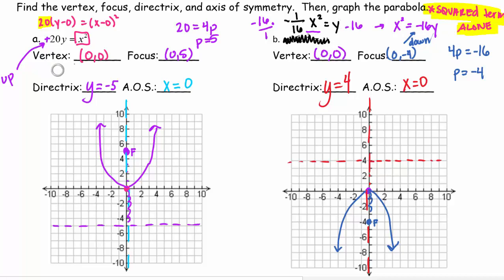Find the vertex, which is (0,0) for both of these. And then I need to find p. That's super important because I need to know how far away to count. You're literally just counting to figure out the focus and the directrix.